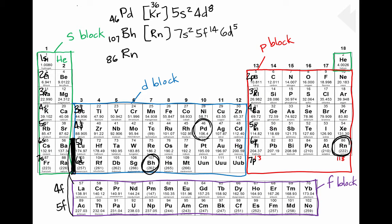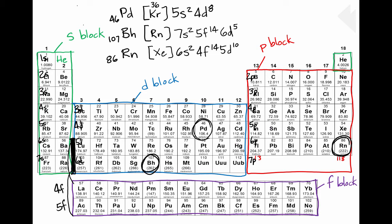Finally, let's do radon. Some students try to abbreviate radon using radon itself — but that doesn't work, because it tells us nothing about radon's electron structure. We need the previous noble gas, which is xenon. Starting with xenon in brackets, we pick up with 6s2, then 4f — don't forget the gap — 4f14, then 5d10, and finally 6p. Since radon is the last element in that row, it's full: 6p6. That is the abbreviated electron configuration for radon.